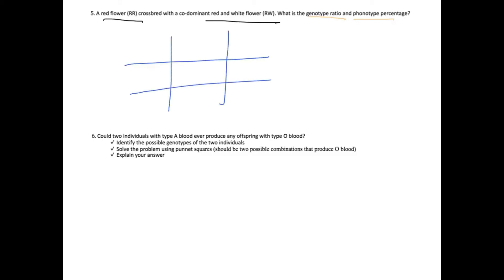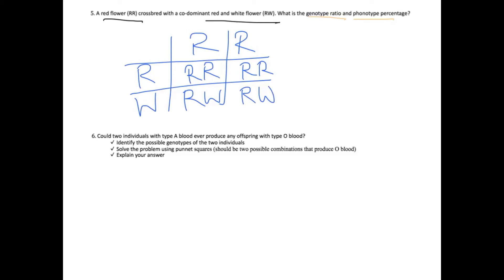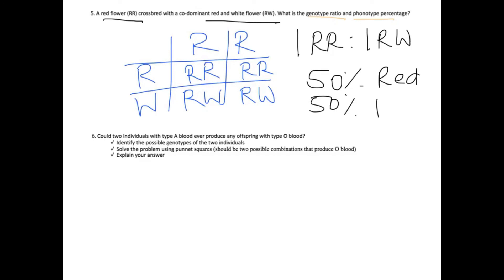Question five: a red flower (RR) is crossed with a co-dominant red and white flower (RW). What is the genotype ratio and phenotype percentage of the offspring? Drawing up our Punnett square with RR × RW gives: RR, RW, RR, RW. The genotype ratio is 1 RR to 1 RW, and the phenotype percentage is 50% red and 50% red and white.